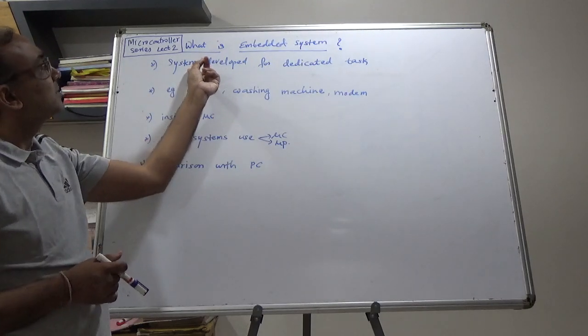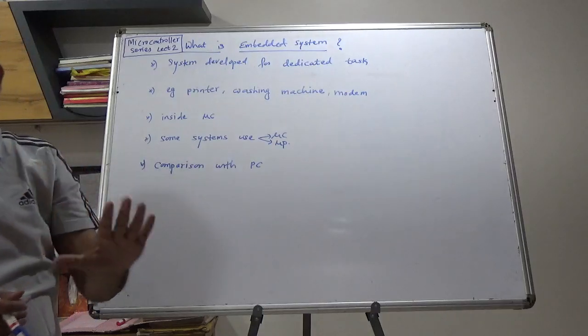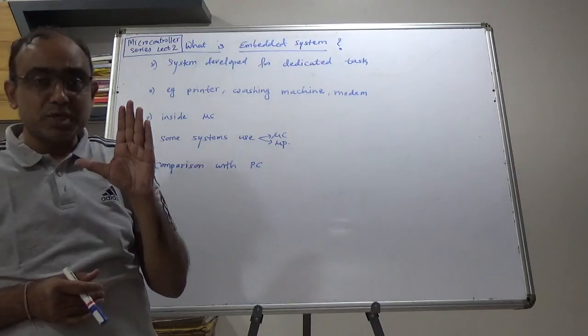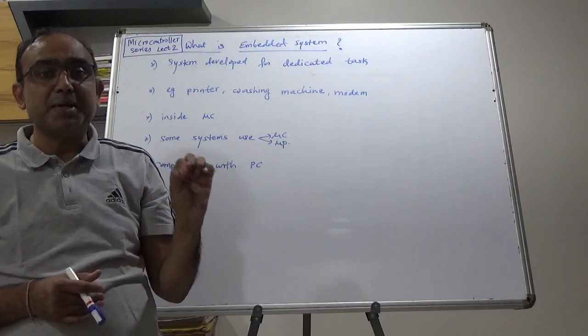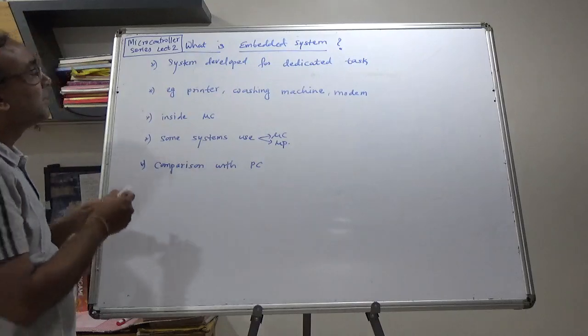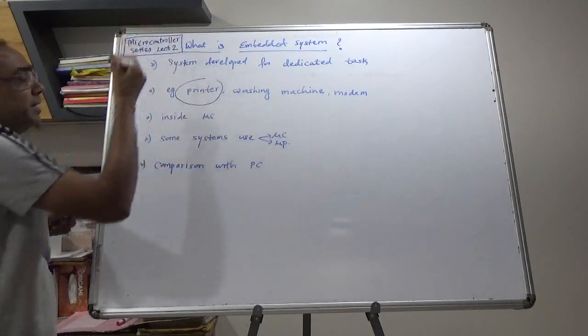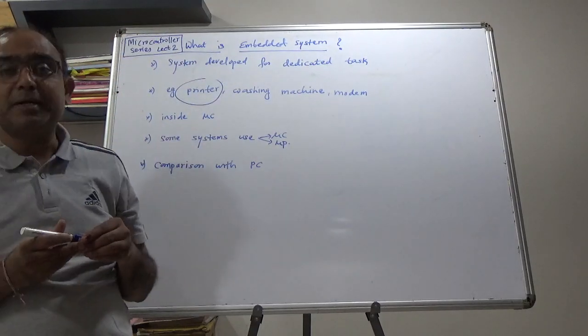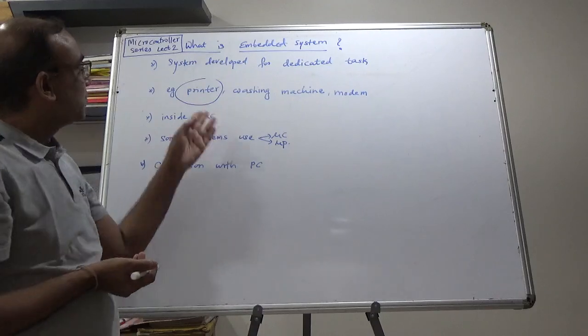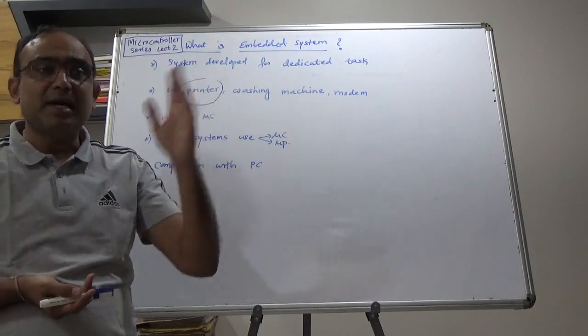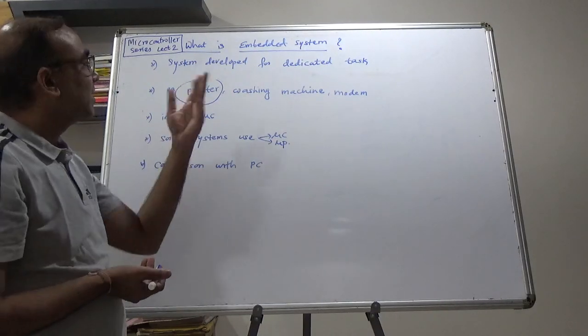But, let us discuss the embedded system. Embedded systems are systems that are developed for a particular task. Now, what are the examples? Let us take an example of a printer. What is the purpose of a printer? To take a printout. So, we are not using printer for any other versatile task like PC.